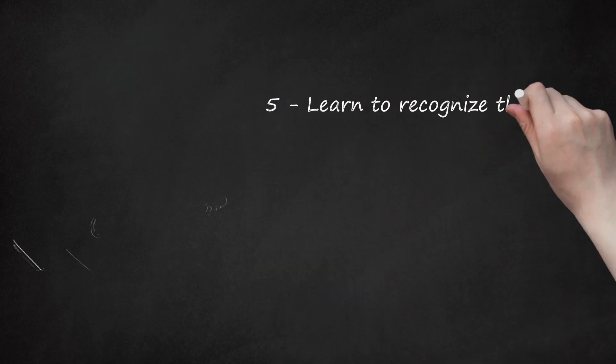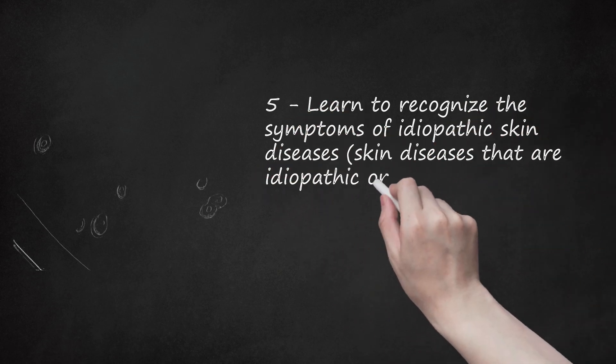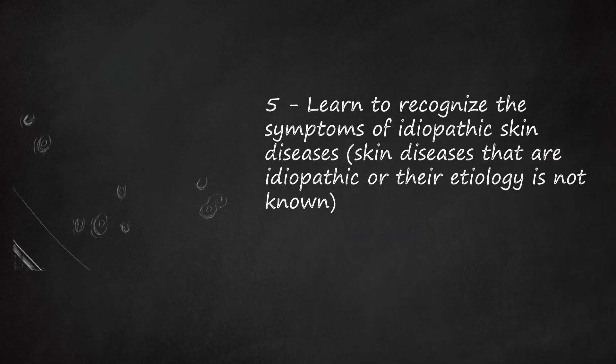Step 5: Learn to recognize the symptoms of idiopathic skin diseases — those whose etiology is not known. Psoriasis: This disorder is idiopathic and its cause is unknown. It is common and affects approximately 1% of the total population. It has a chronic course with remissions and exacerbations. Often the nails of affected persons are involved. The disorder is manifested by excessive formation of keratinocytes in the basal layer of the skin, leading to more formation of keratin and its deposition in the epidermis.